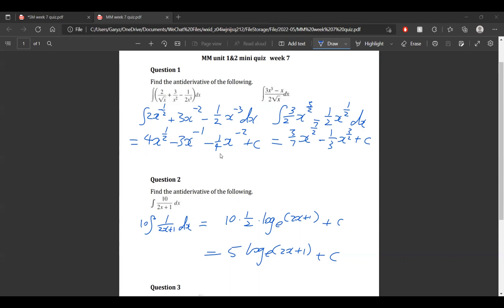So by the same logic, negative 2 plus 1 is negative 1. And we know that negative 1 times something is 3, and that something must be negative 3. And that's how we work out the coefficient of every single term here. Don't forget the plus c at the end.